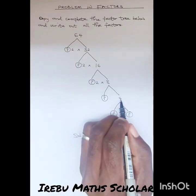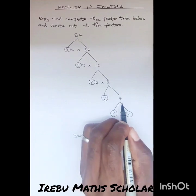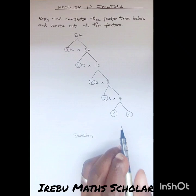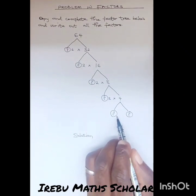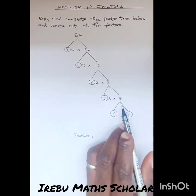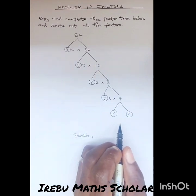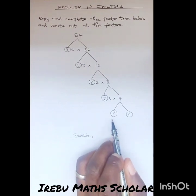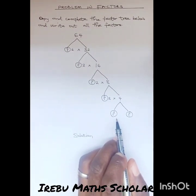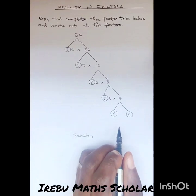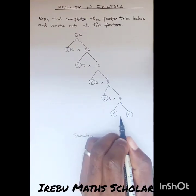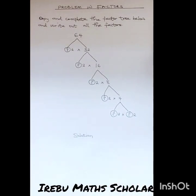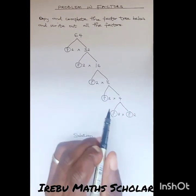So again, what are you going to multiply 4 by to give us 8? Also, it's going to be 2. And finally, what 2 numbers are you going to multiply together to give us 4? You must know that the 2 numbers must be prime numbers, but we can also say 1 and 4, though 1 is not a prime number. So the 2 numbers you are going to multiply together to give us 4 are 2 and 2. So what we have in all these circles are 2, 2, 2, 2, 2, 2, and 2.